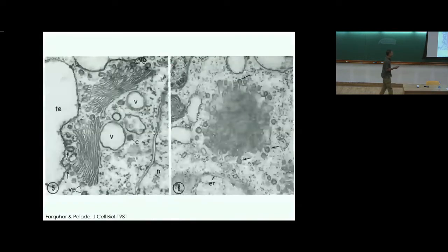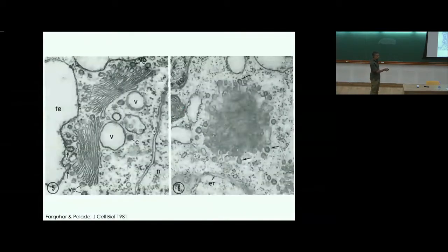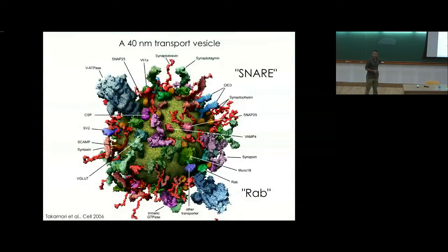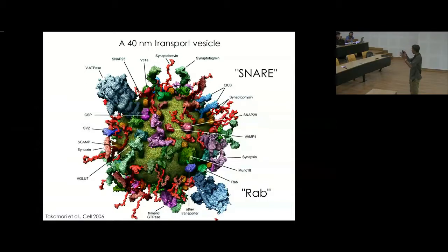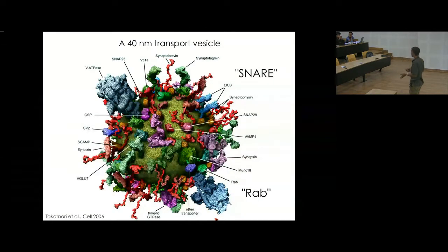If you zoom in on a vesicle — this is a computational reconstruction — that's a 40 nanometer vesicle. The yellow-green stuff in the middle is the membrane and these things are proteins stuck in the membrane. Inside the vesicle there are other proteins and small molecules.